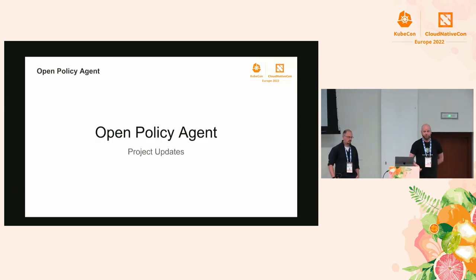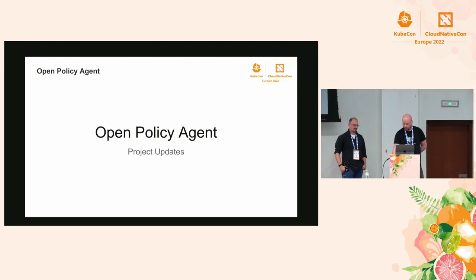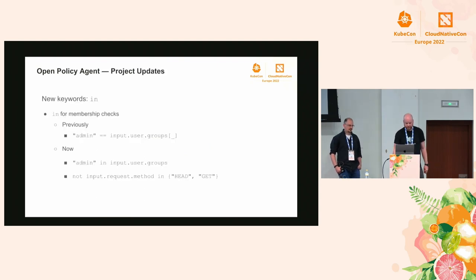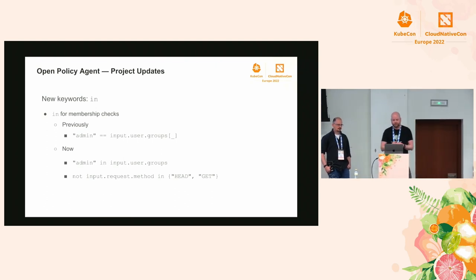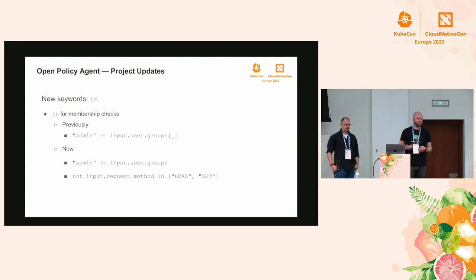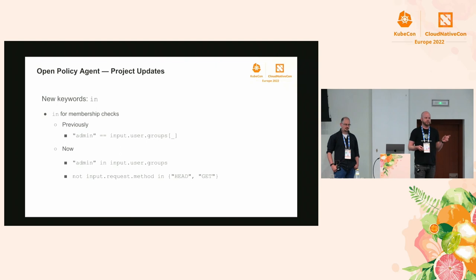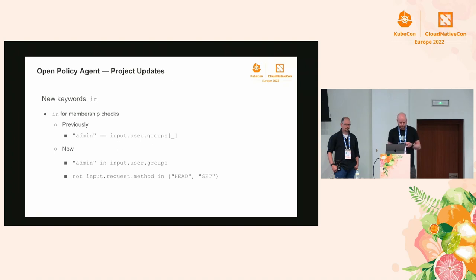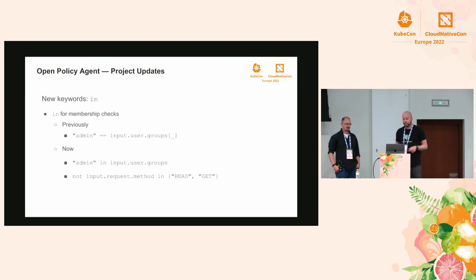That was an introduction to OPA and Rego. Now for some project updates. There are a couple of new keywords. There's a new keyword called 'in' - pretty much what it sounds like, it checks for membership. You can say: is this value in this collection? Similar to what you'd find in Python. Previously you'd iterate over a collection and check if any value equals this, but now you can say something like 'is admin in the groups for this user.'